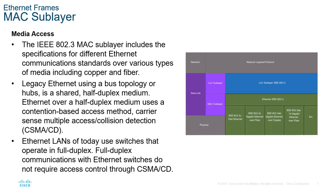There are subcategories of 802.3: 802.3u is Fast Ethernet, 802.3z is Gigabit over fiber, and 802.3ab is Gigabit over copper. So 802.3z versus 802.3ab are slightly different — both Gigabit, but over different media.